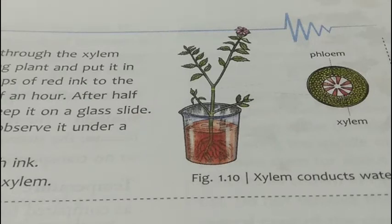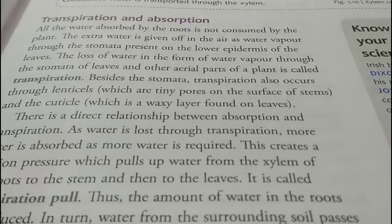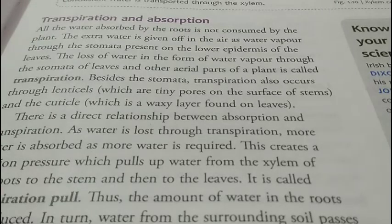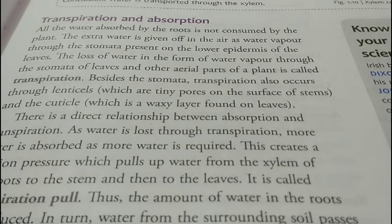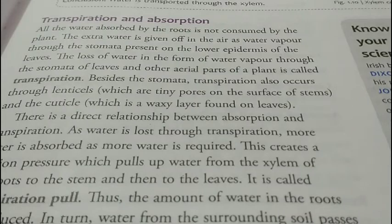All the water absorbed by the roots is not consumed by the plant. The extra water is given off in the air as water vapor through the stomata present on the lower epidermis of the leaves. The loss of water in the form of water vapor through the stomata and other aerial parts is called transpiration. Besides stomata, transpiration also occurs through lenticels — tiny pores on the surface of stems — and through the cuticle, the waxy layer found on leaves.